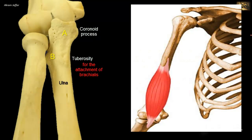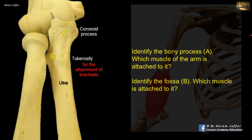Brachialis arises in the arm from the front of the distal part of the humerus, passes in front of the elbow joint, and is attached to the tuberosity of the ulna. Thus, the muscle is a powerful flexor of the elbow joint.